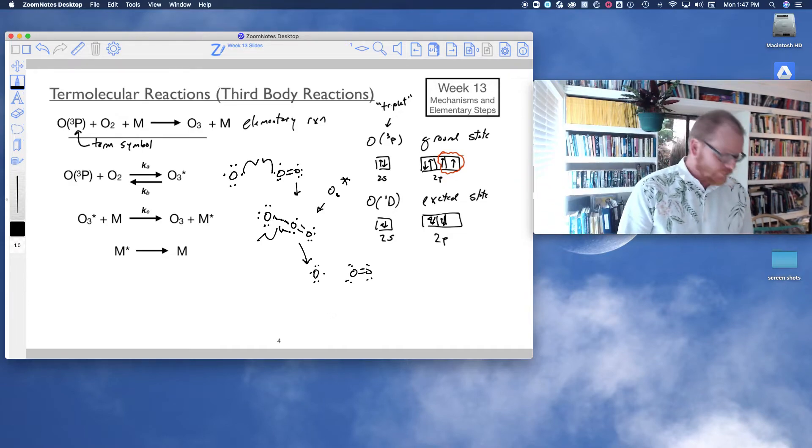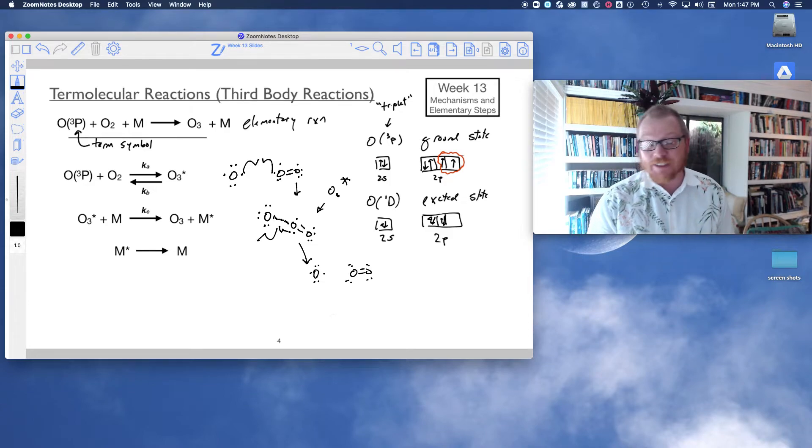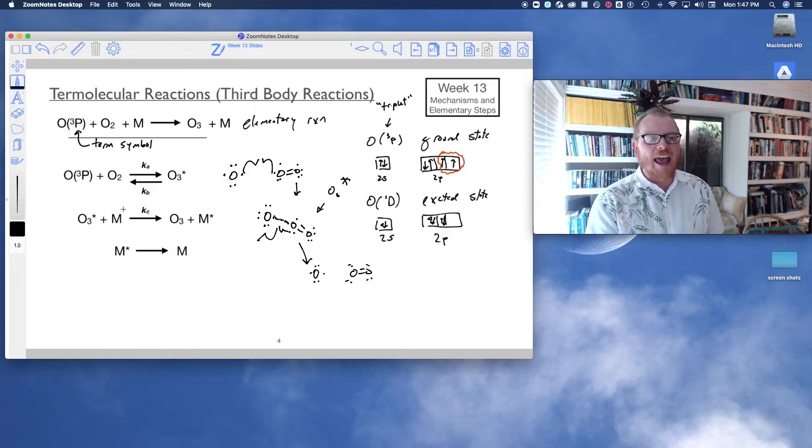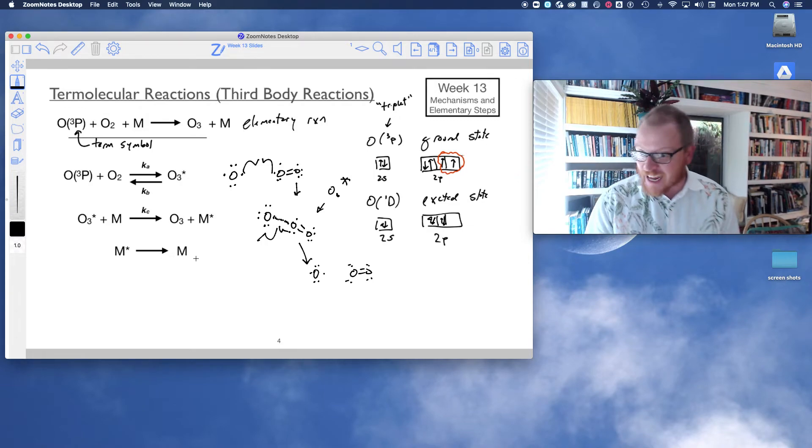It's just as likely to kick right back out and reform that O triplet P and O2. As it turns out, now this third body collides with this unstable molecule and takes away some of its excess kinetic energy and allows the molecule to stabilize. That excess kinetic energy is now given to the third body. So now the third body is in some kind of elevated excited state, which then it can quickly react and decay back to its normal state.